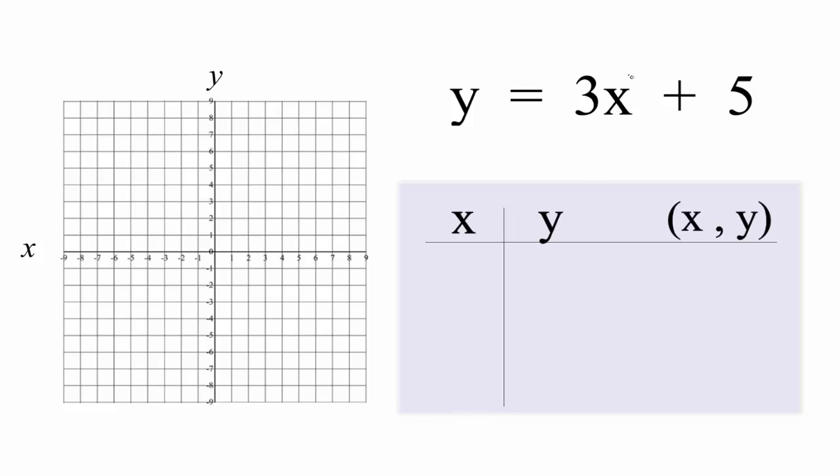Let's start by putting some values in for x. I like to start out with 0 because that usually ends up fitting on my graph. So 3 times 0 plus 5, that's 0 plus 5, y would be 5. Then let's put 1 in: 3 times 1 is 3 plus 5, that'll give us 8 for y.